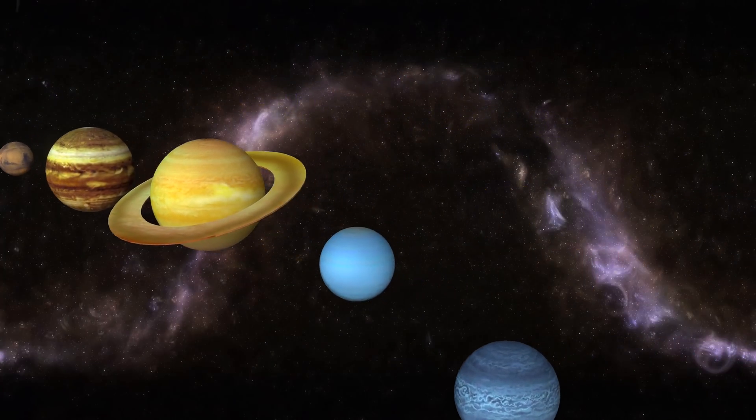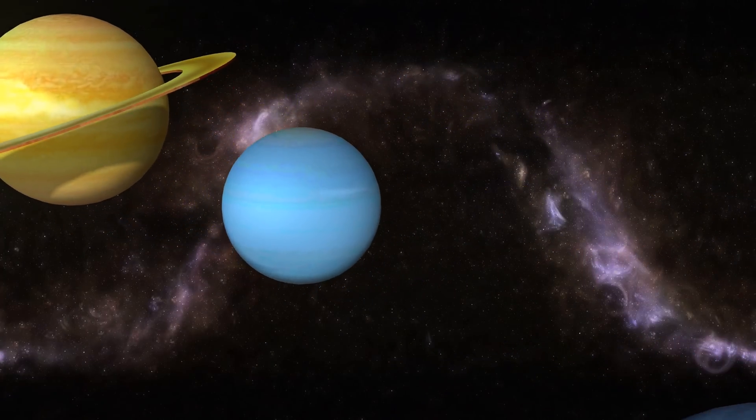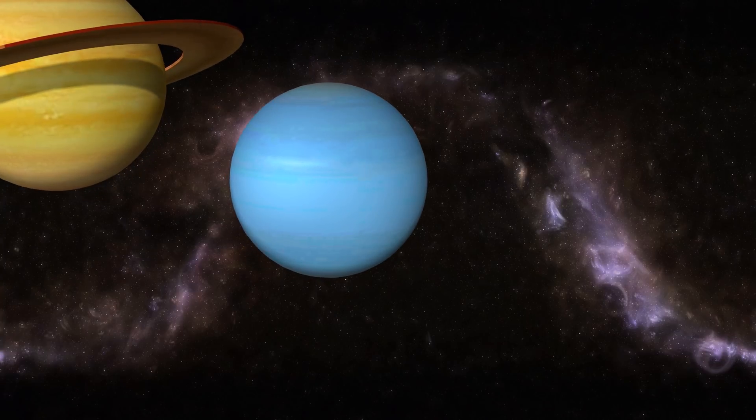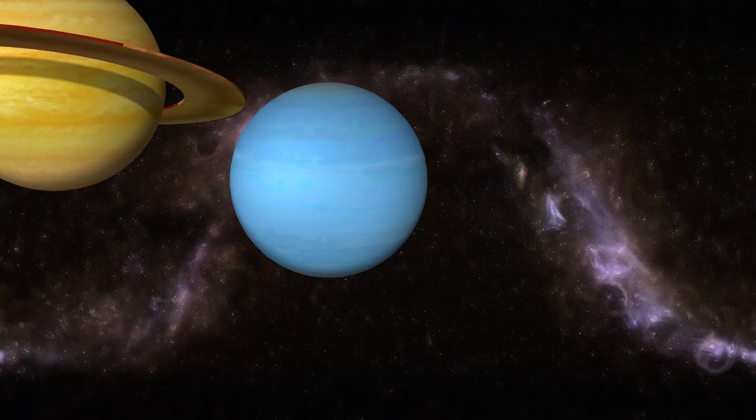Uranus is the seventh planet from the sun with the third largest diameter in our solar system, is very cold and windy.